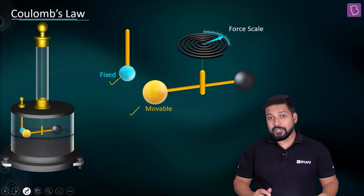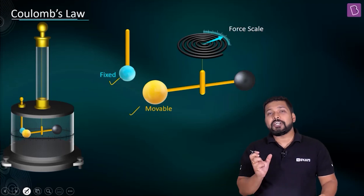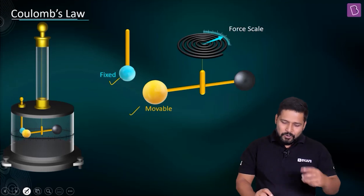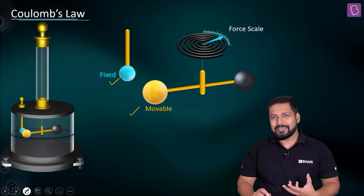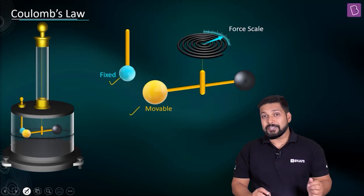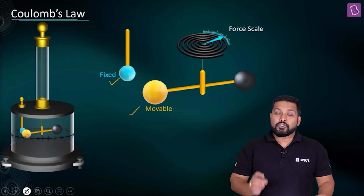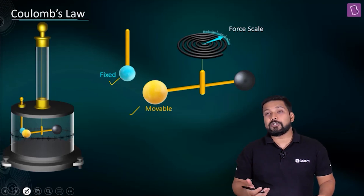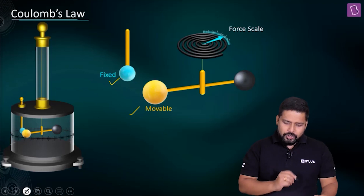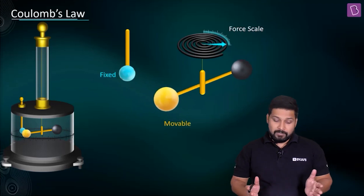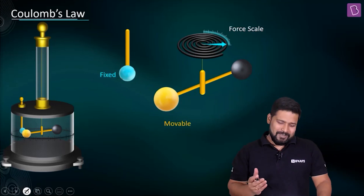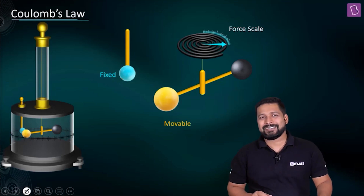When they repel each other, there will be a torsion — a twist — in the string connecting them. You measure that angle, which is proportional to the force. By measuring this torsion you get an idea about the electrical force. Once both are charged, the repulsion is visible and a force scale allows you to measure the charge.